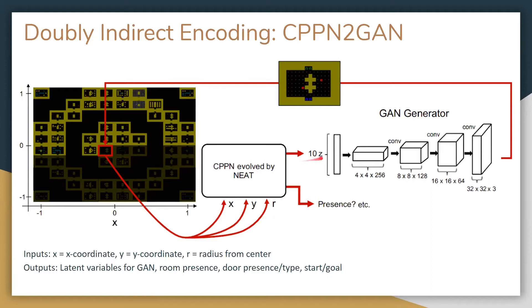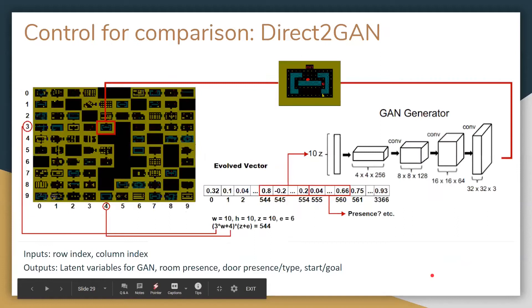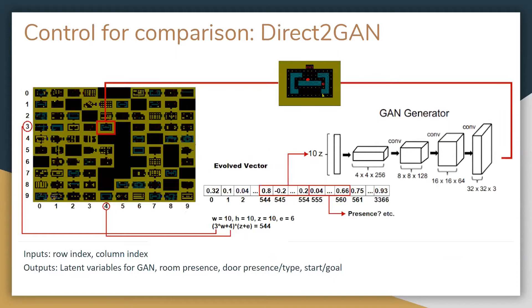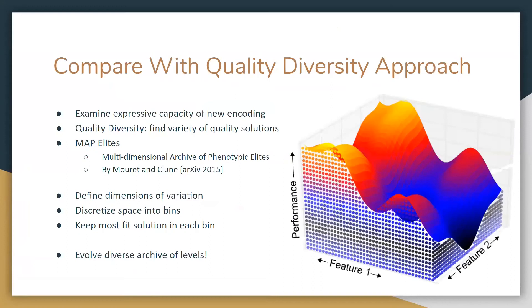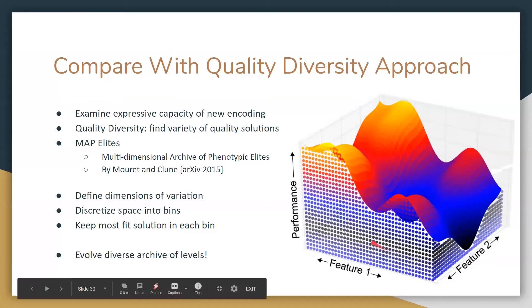We compared CPPN-to-GAN with a direct GAN approach where, for a 10-by-10 dungeon, you just evolve 100 distinct latent vectors — things get kind of messy and chaotic, but it works and served as our comparison point. We compared these using a quality diversity evolution algorithm called MAP-Elites — the Multi-dimensional Archive of Phenotypic Elites. The idea is to explore the expressive capacity of the encoding: don't just maximize one fitness objective, but find as many different ways as possible of representing levels while getting the best possible outcome for each. You define a fitness function, dimensions of variation, and try to fill bins with a variety of cool different levels.